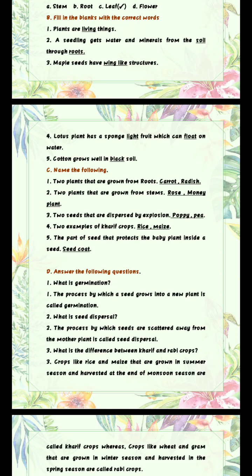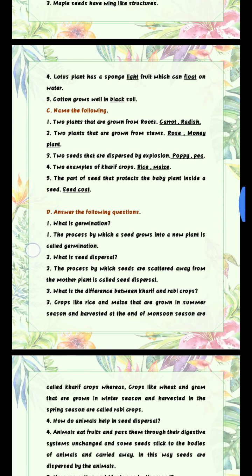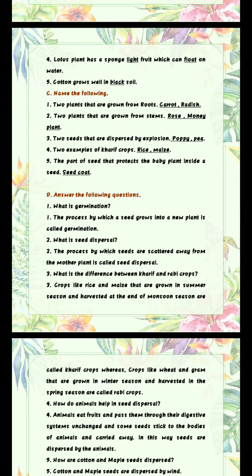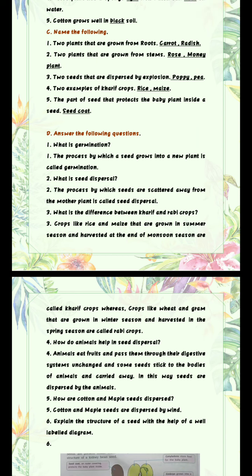Now come to the next exercise: Answer the following questions. Question 1: What is germination? Answer: The process by which a seed grows into a new plant is called germination. Question 2: What is seed dispersal? Answer: The process by which seeds are scattered away from the mother plant is called seed dispersal.